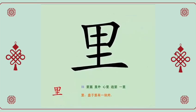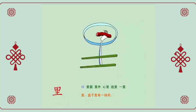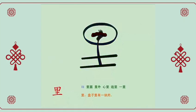里, inside. There is a piece of meat on the plate. 里外, inside and outside. 心里, in the heart. 这里, here, this place.